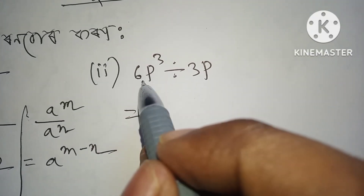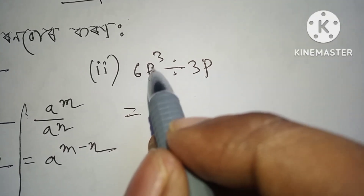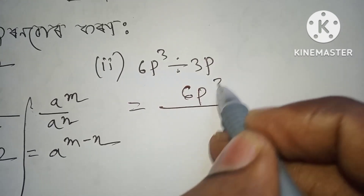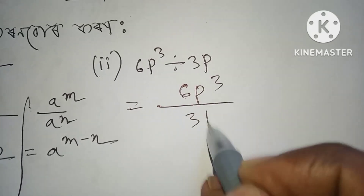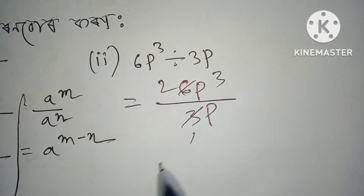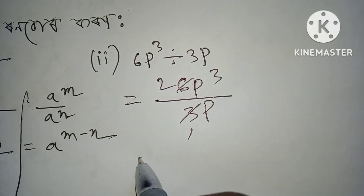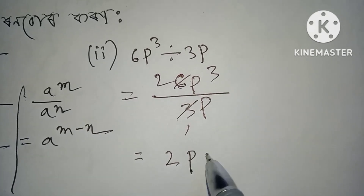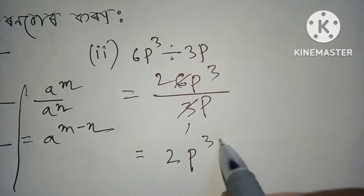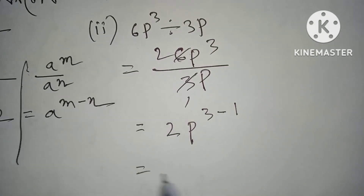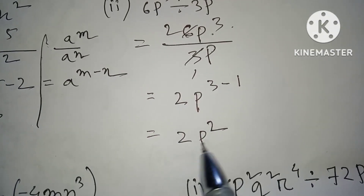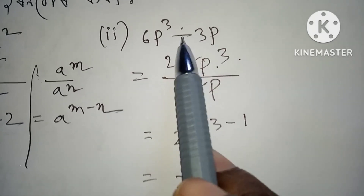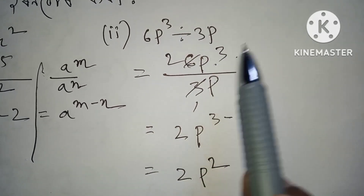Number two: 6 P to the power 3 divide 3P. 3 ones are 3, 3 twos are 6. Answer: 2P to the power 2. Rakiba divide hole hushak minus.